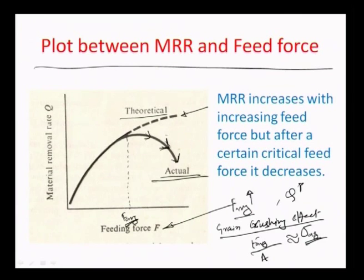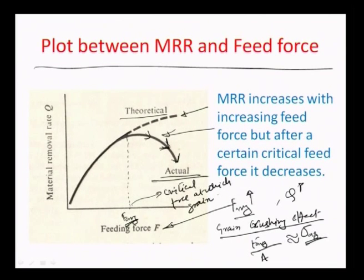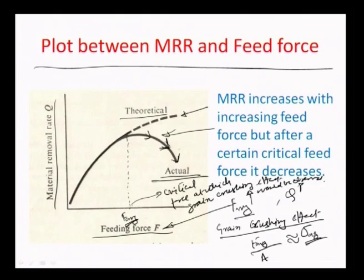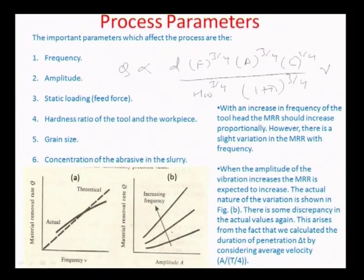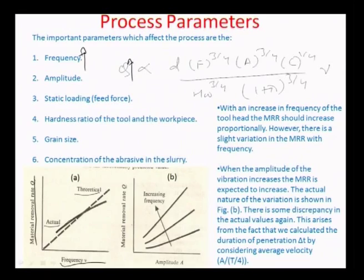The actual trend of the material removal rate shows a critical force above which grain crushing starts to take place. For frequency, if frequency goes high the material removal rate goes high, visible in the trend. Actual varies slightly from theoretical, which shows almost a direct linear relationship with increased frequency, due to reasons associated with the inertia of the slurry and the tool head.